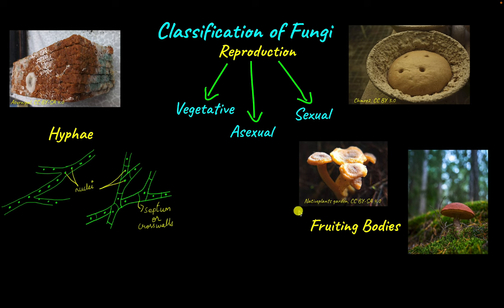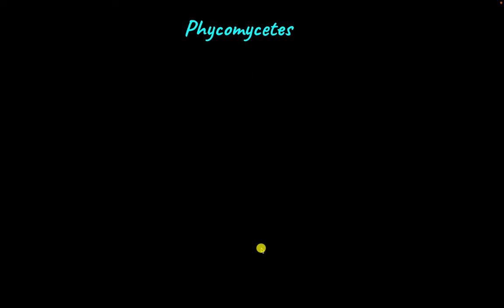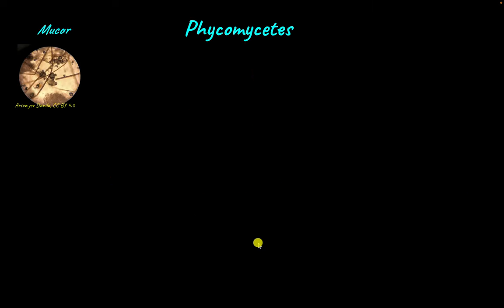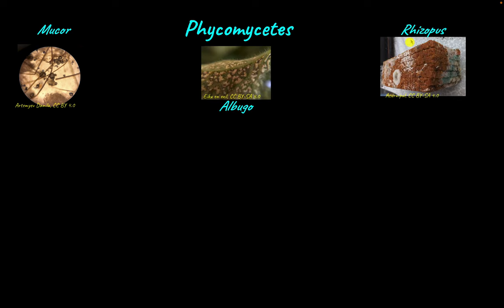Based on these characters, fungi are classified into four major phyla: Phycomycetes, Ascomycetes, Basidiomycetes, and Deuteromycetes. Let's first start with Phycomycetes. Examples of Phycomycetes include Mucor, Albugo, and Rhizopus, which is the infamous bread mold.